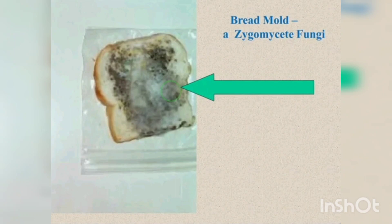Flagellated cells or motile cells are absent. Asexual reproduction is by means of non-motile sporangiospores or aplanospores, commonly produced in the sporangia. Chlamydospores are usually formed. Sexual reproduction involves gametangial fusion and the formation of a zygospore; zoospore formation is absent. The zygospore is a resting body.